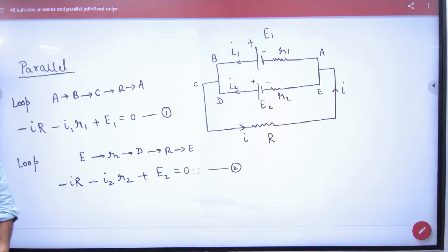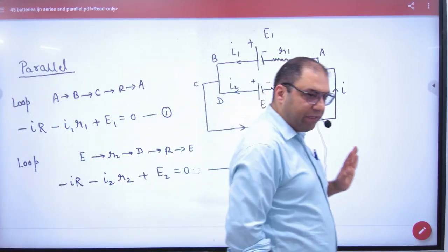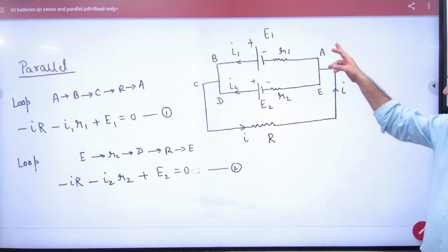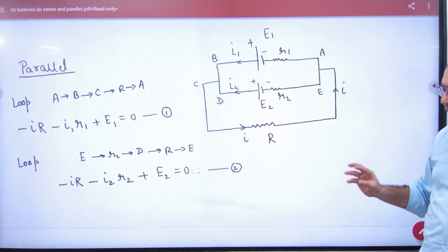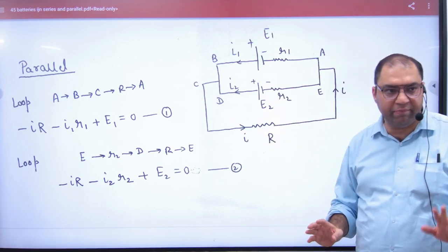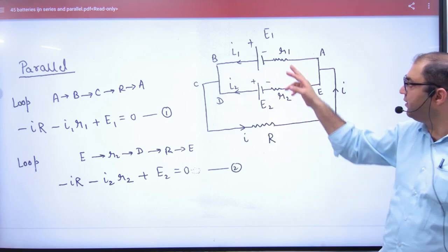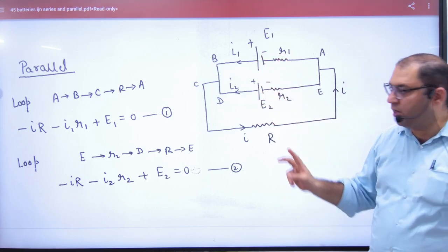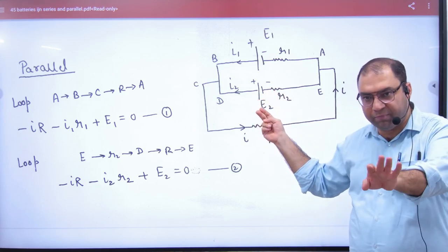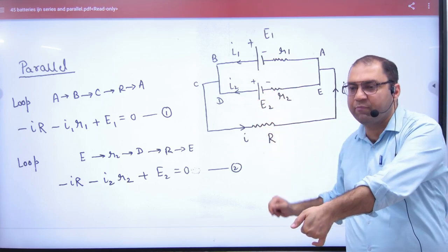In batteries connected in parallel, suppose you have a battery E1 having internal resistance R1 and E2 with R2, and external resistance R. These batteries are connected in parallel, plus with plus, minus with minus. If reversed, it will remain in parallel but one battery's polarity is reversed.